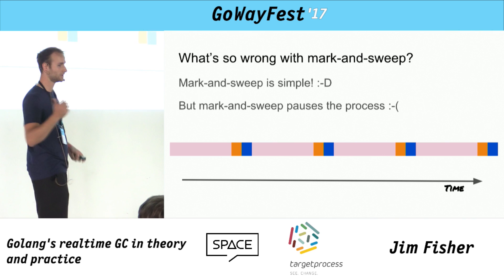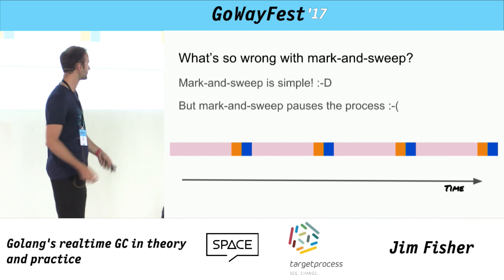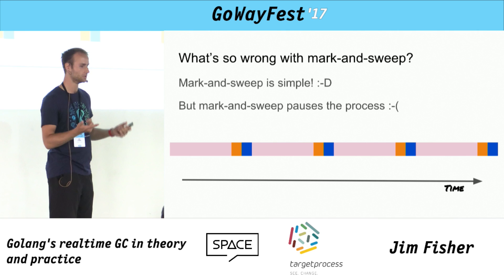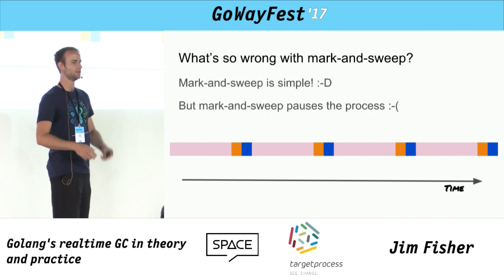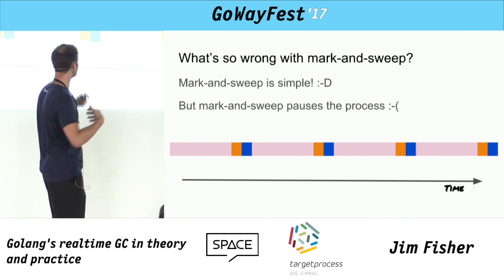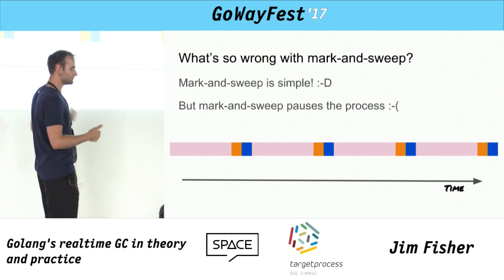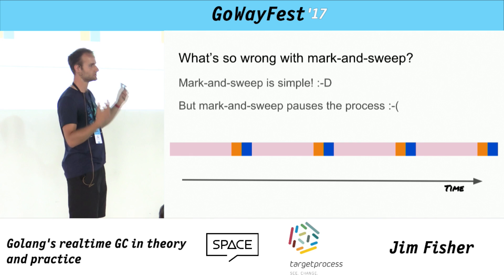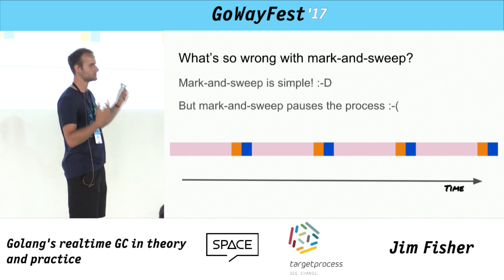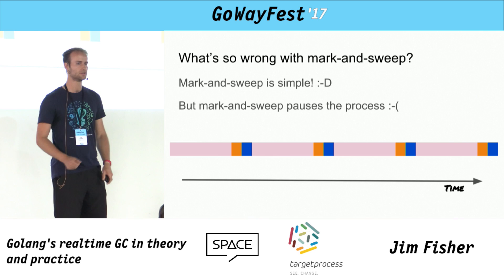What's wrong with mark and sweep? It's simple, but there are criticisms. It traverses your entire heap, which is expensive. It doesn't do compaction. But most importantly for us at Pusher, it pauses your process — you run your program, pause it, do mark, do sweep, then unpause. These mark and sweep phases can take a long time, proportional to how many objects you have in the heap. If you have a lot of things in memory like our message cache, it starts turning into dozens of milliseconds, which is unacceptable for us.